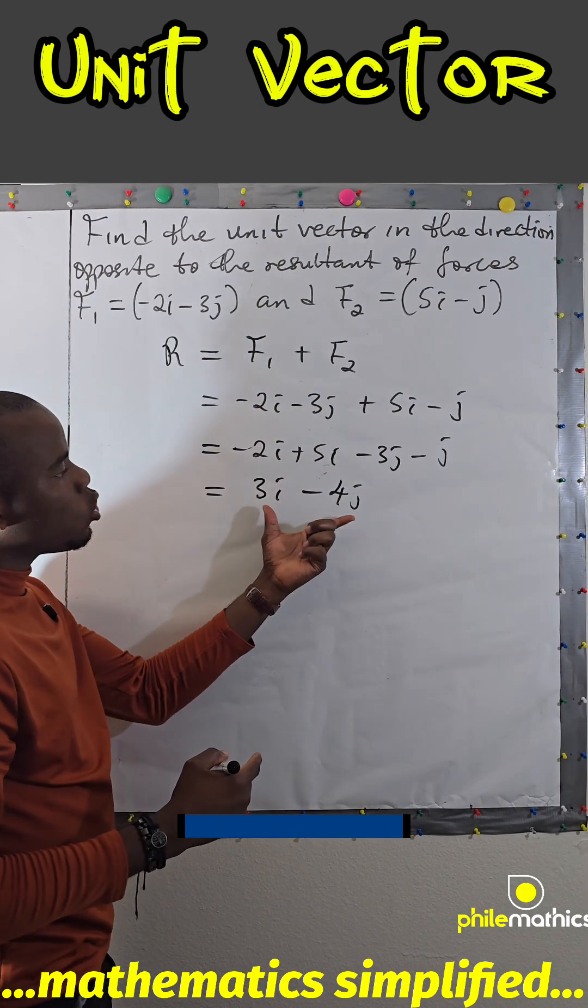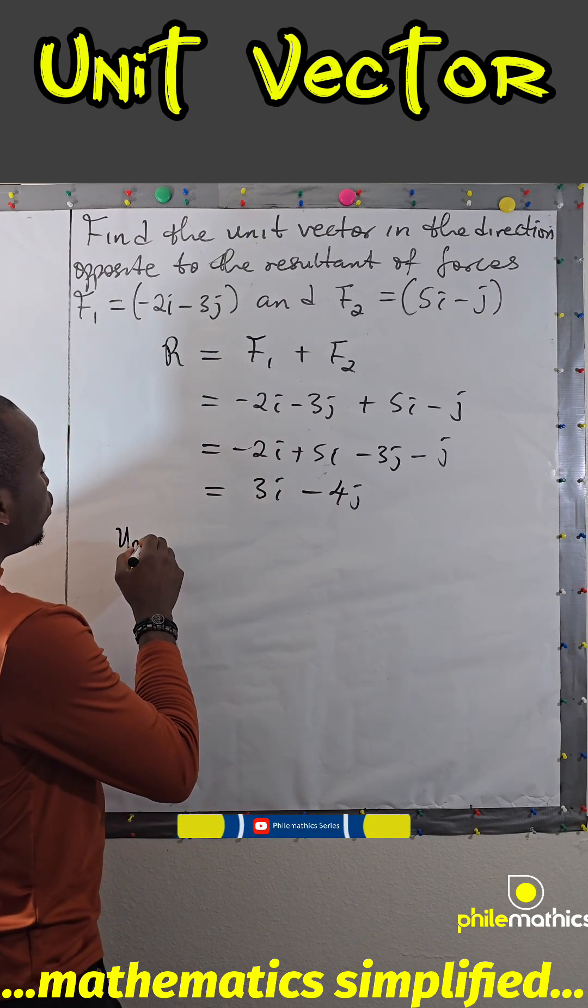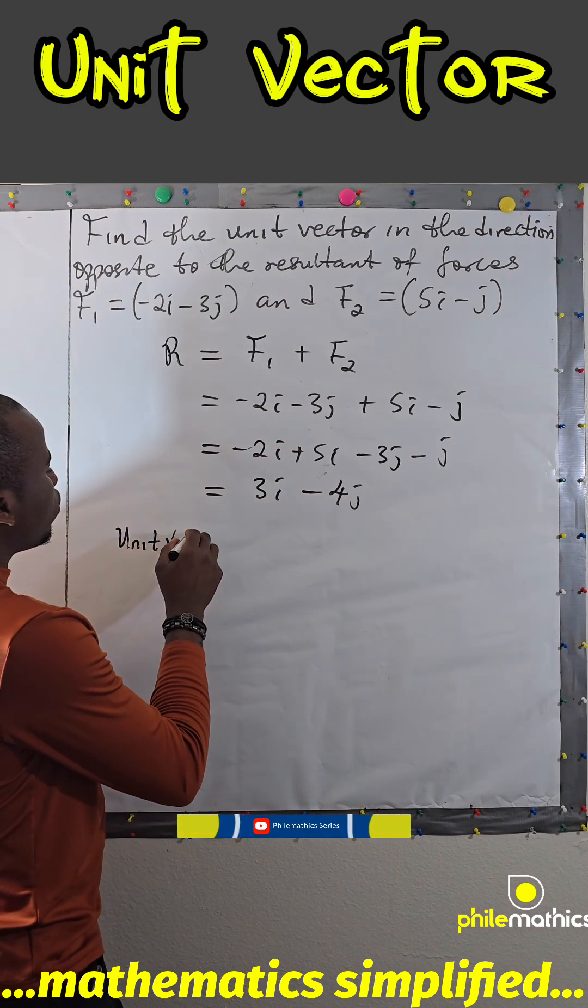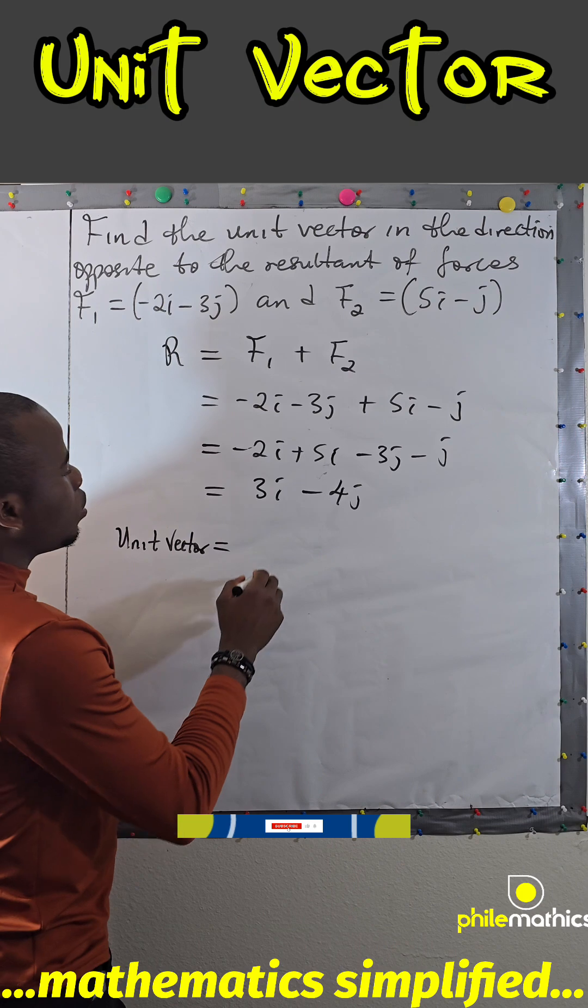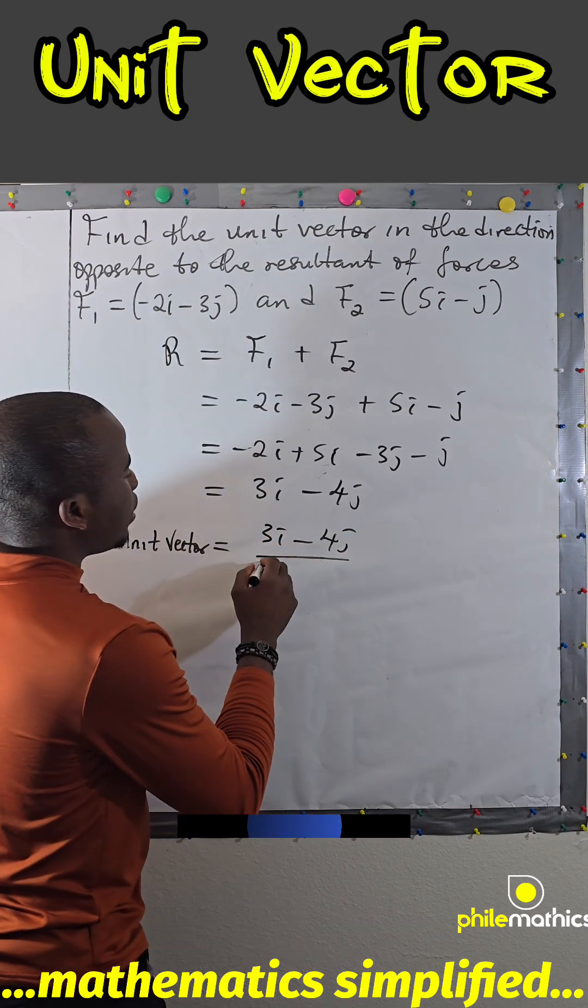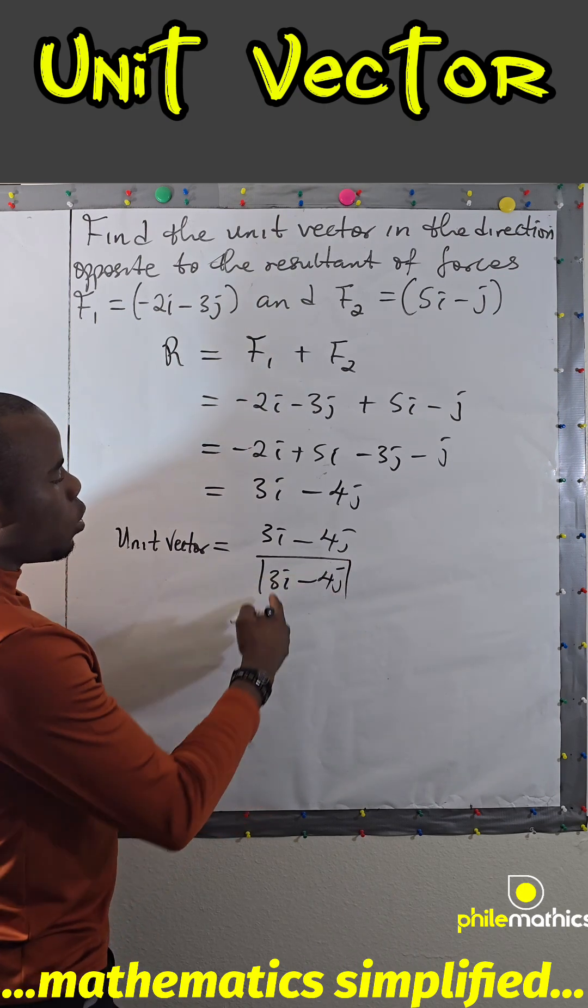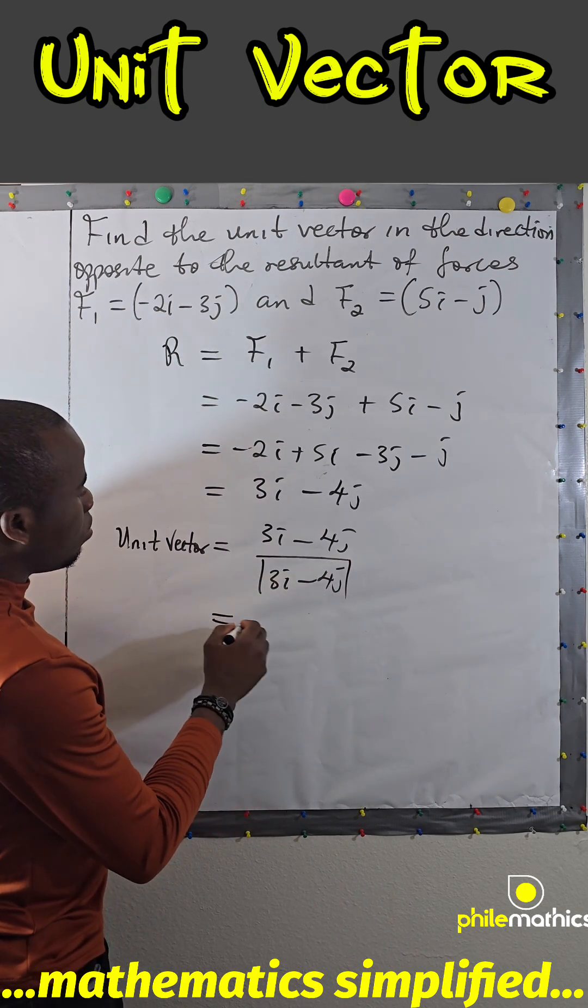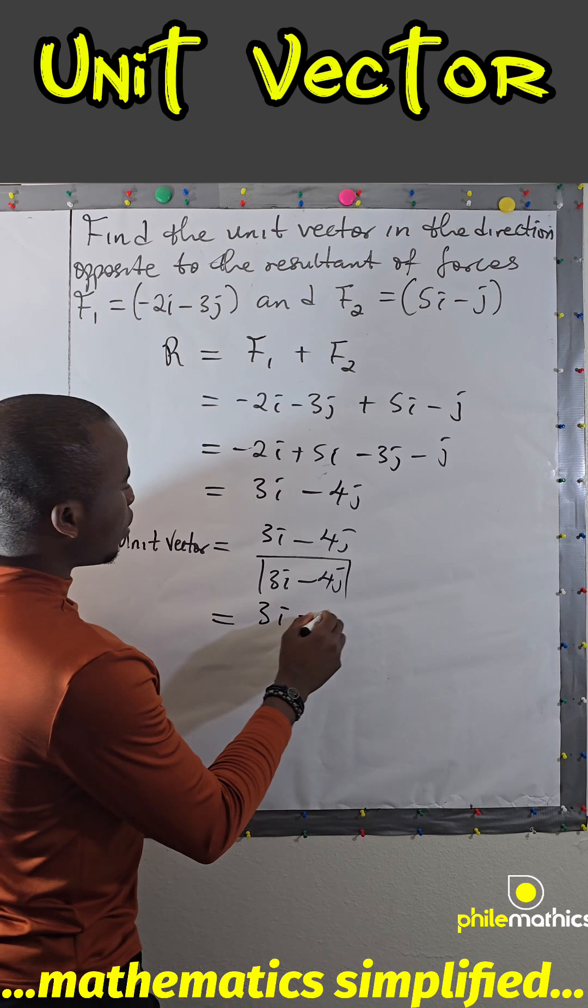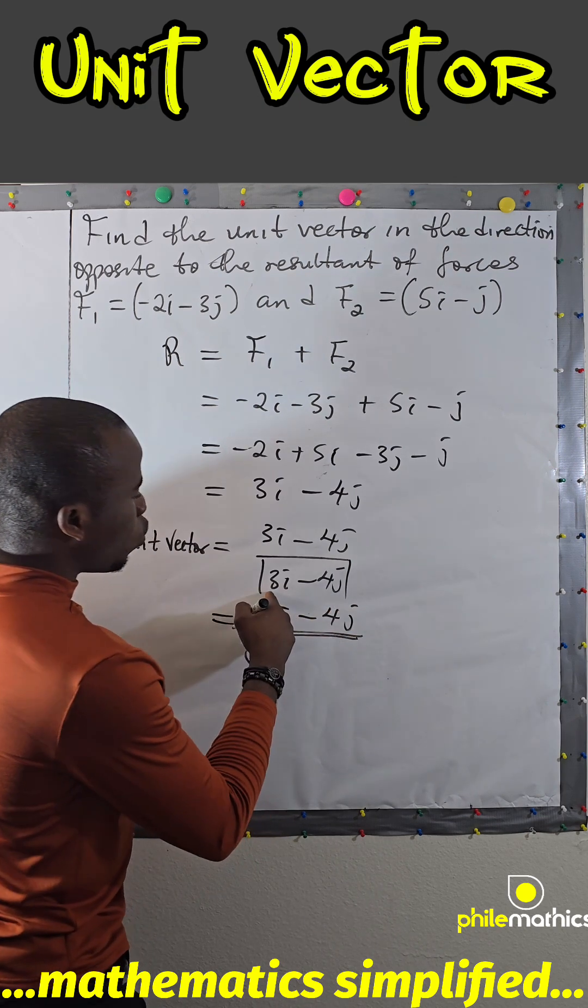So the unit vector in the direction opposite this resultant of forces, unit vector will be 3i - 4j over its magnitude. So what's the magnitude here? The magnitude is simply square root of 3 squared plus -4 squared.